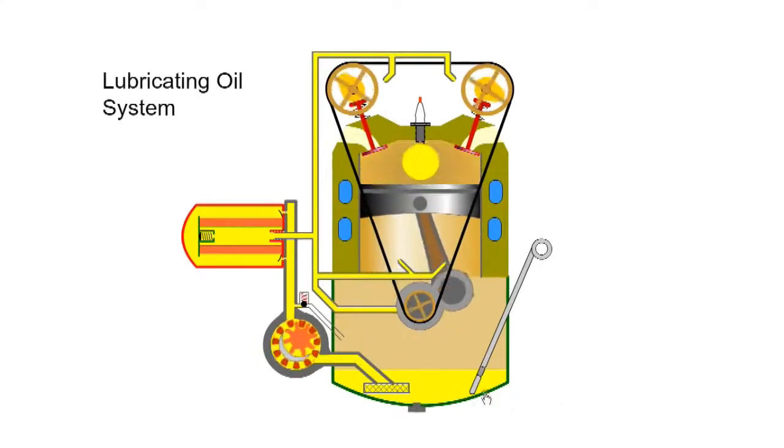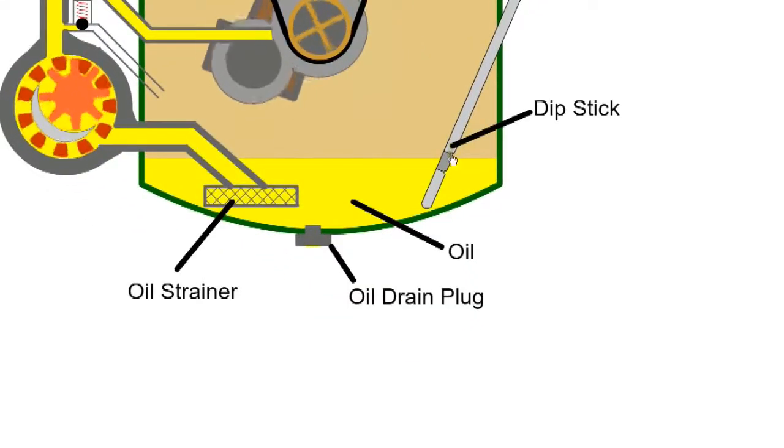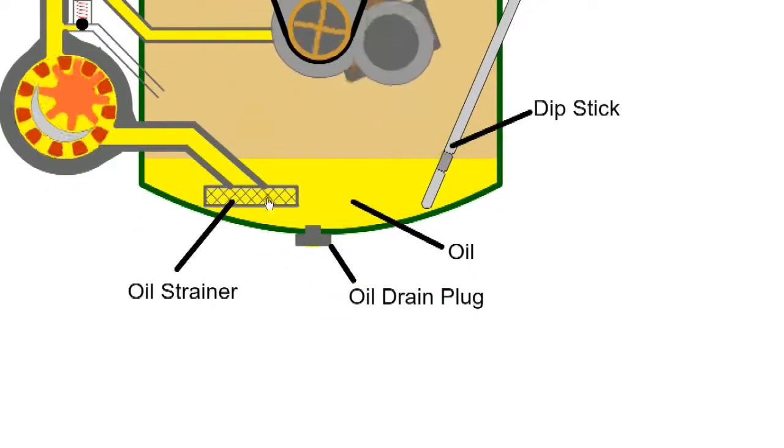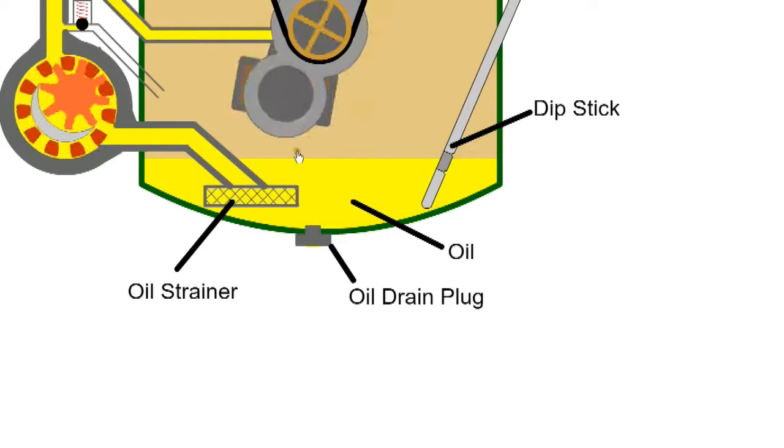The sump or oil pan provides storage of oil for the system and oil level can be checked with a dipstick. At the end of the pickup tube, a wire mesh strainer protects the inlet to the pump. The oil level must be above the level of the inlet strainer but not so high that it will foul the rotating crankshaft.